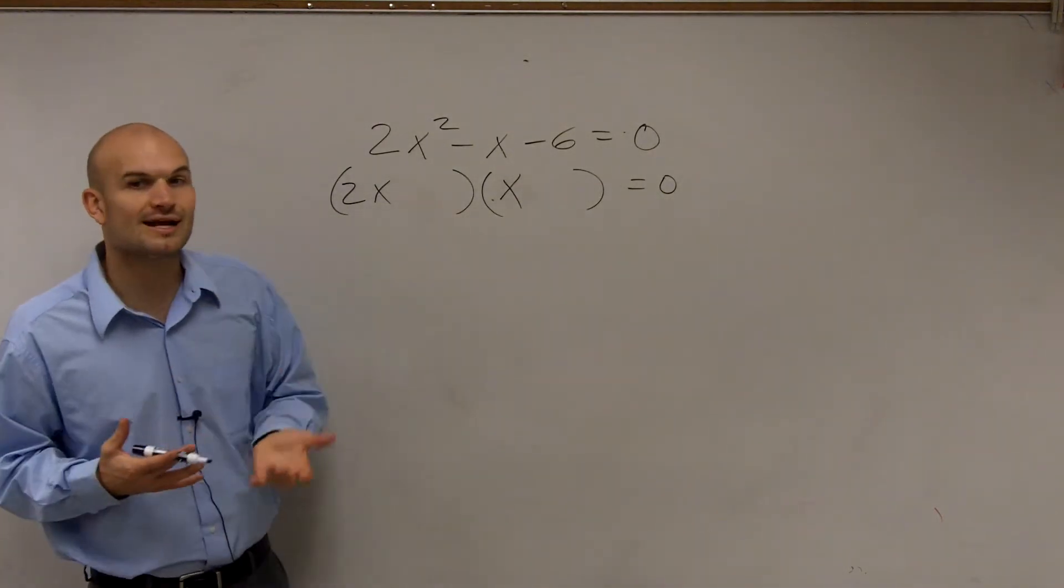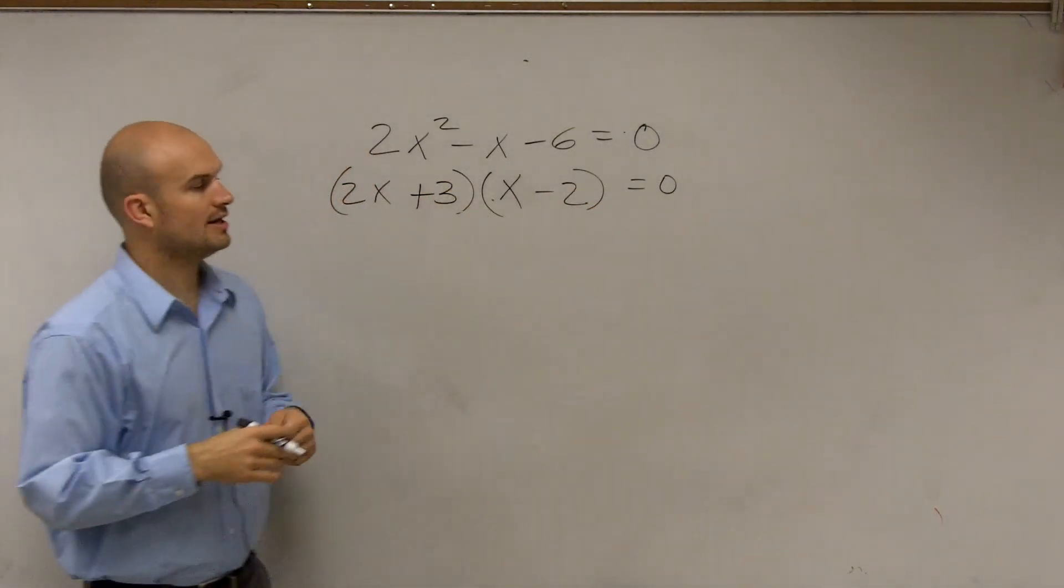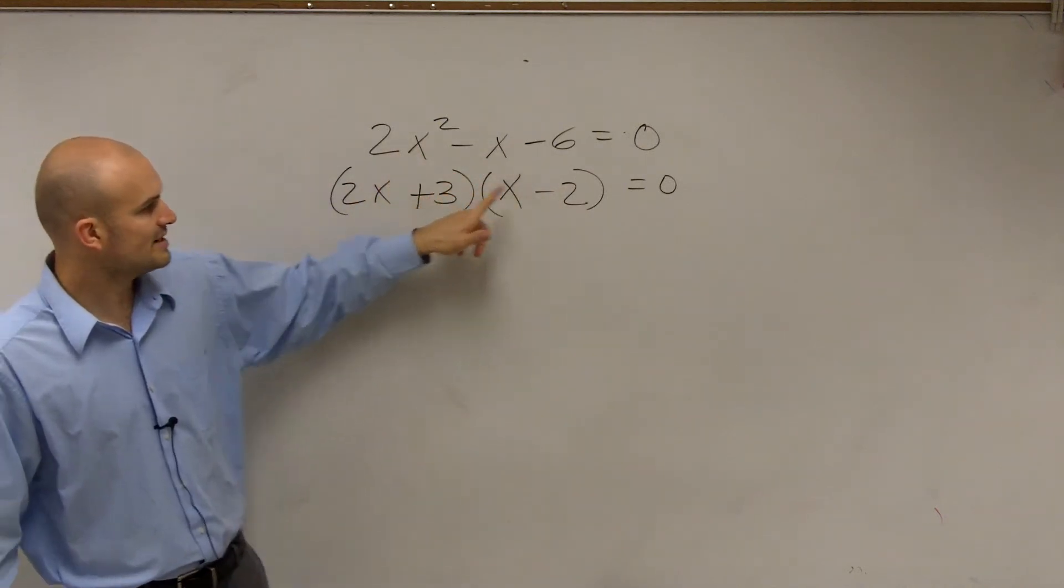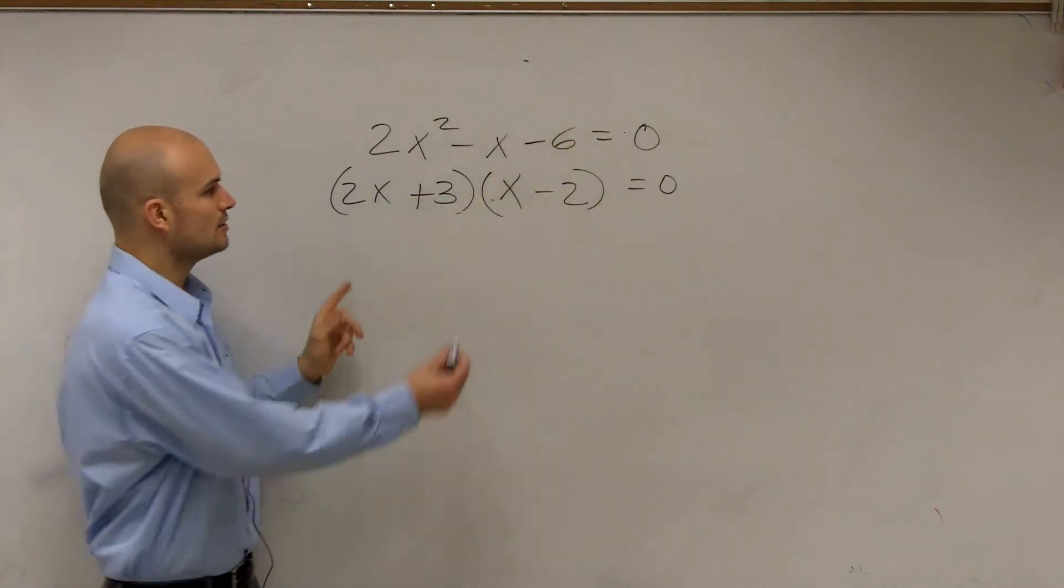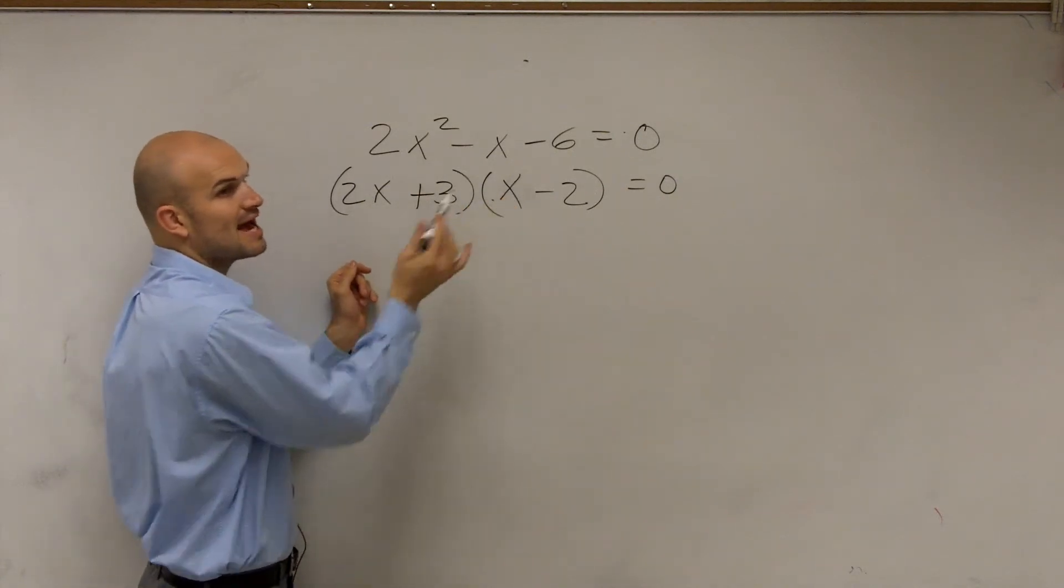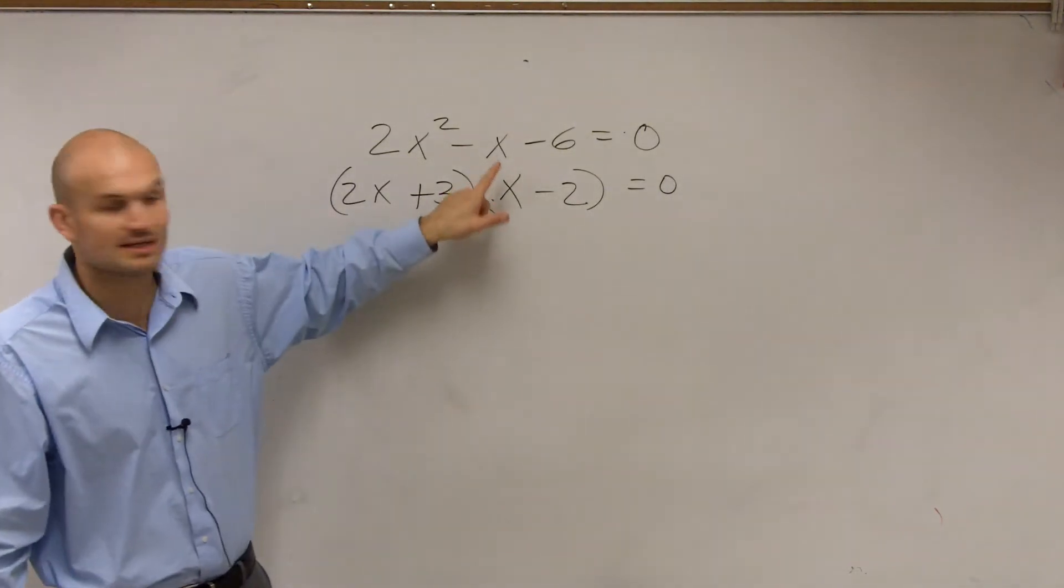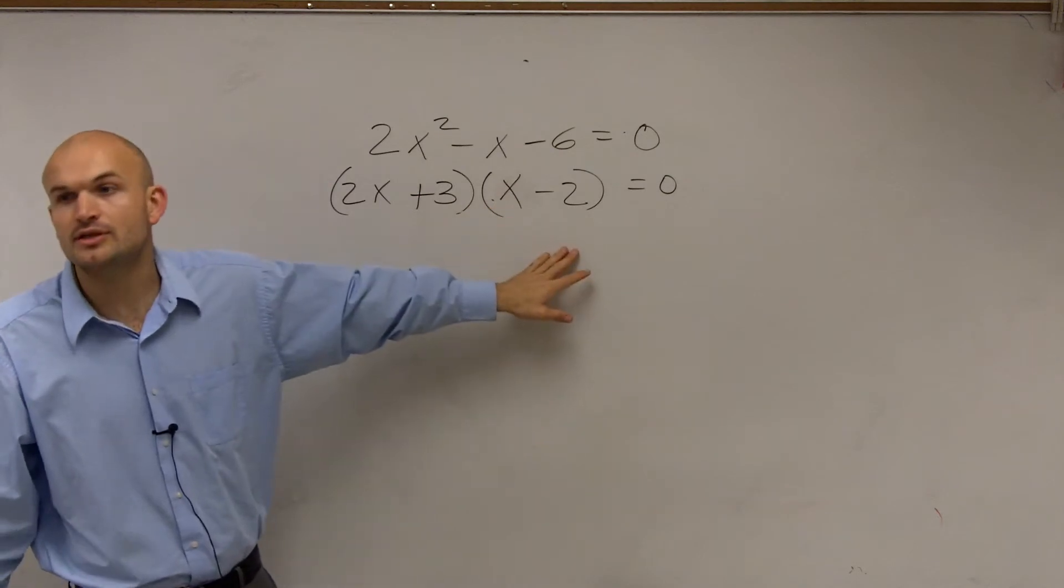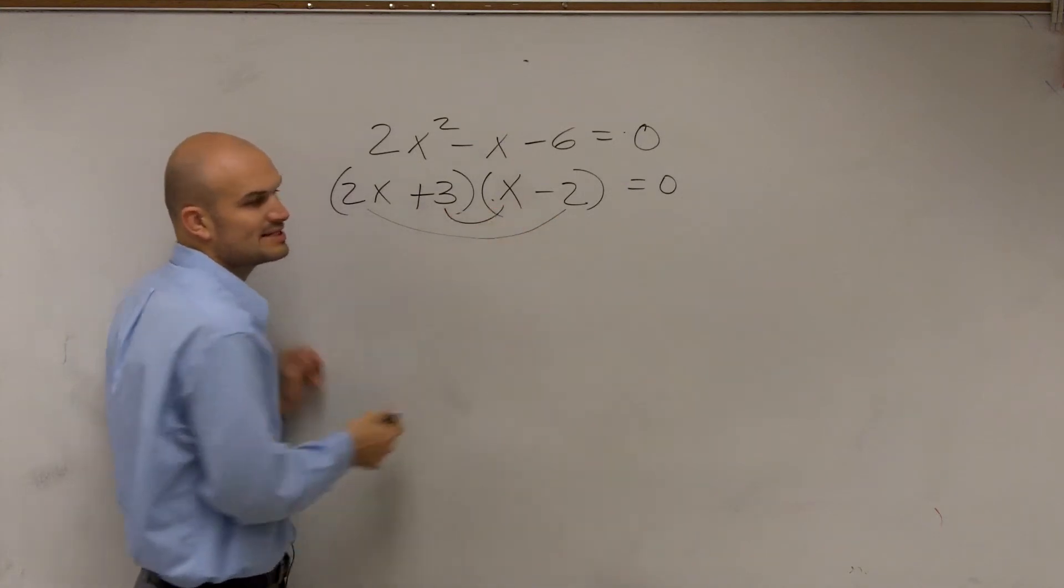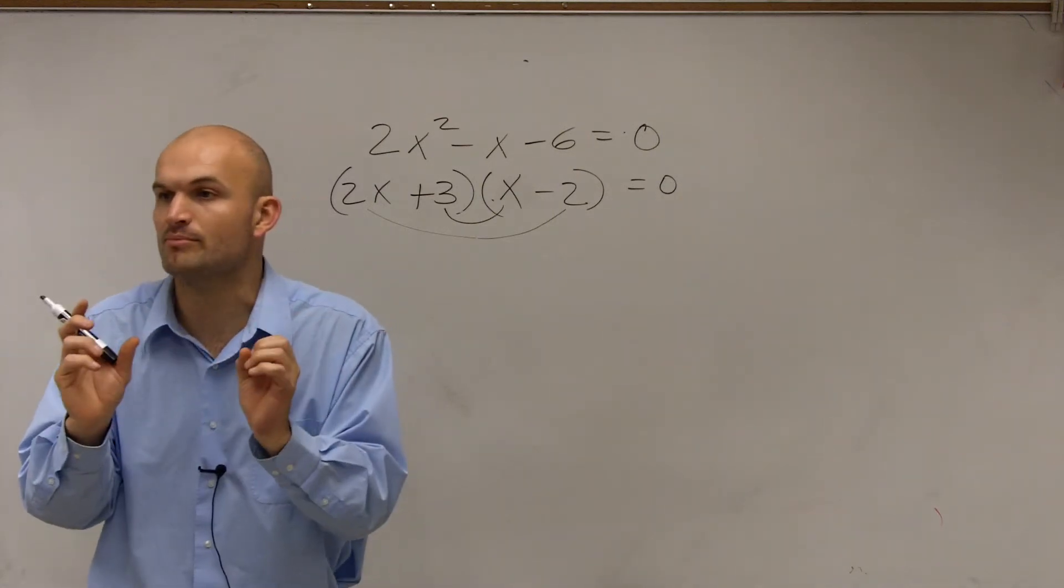But what we remember by applying our formulas is that this 2 is going to multiply. So let's double check this. 2x times x is 2x². 3 times -2 is -6. Then 2x times -2 is going to give you -4x, and 3 times x gives you positive 3x. So -4x plus positive 3x is going to leave you with -x. So therefore, this would be the correct form that you'd have.